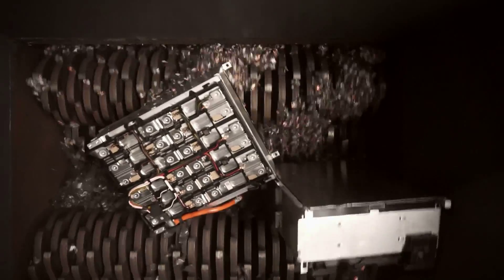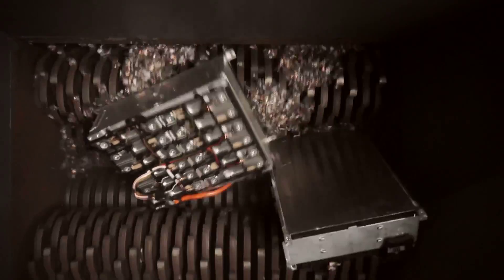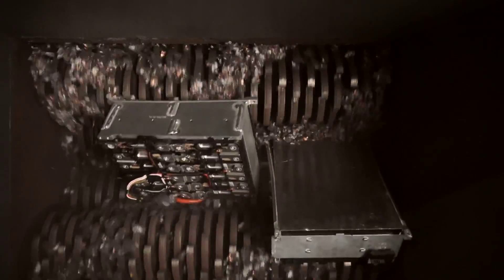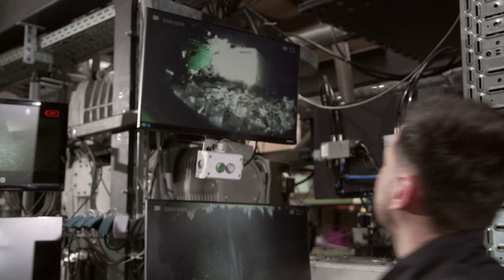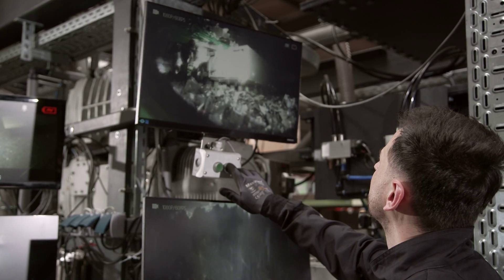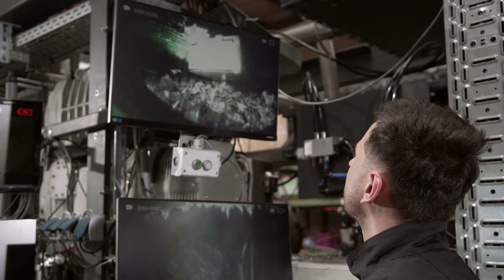The cells also still contain the liquid electrolyte, which is highly flammable. For this reason, shredding takes place using nitrogen packaging gas. This protective gas prevents uncontrolled reactions.